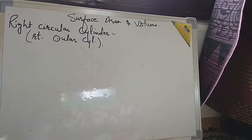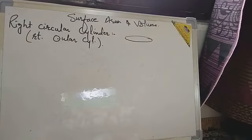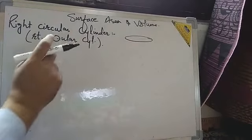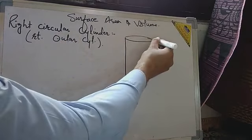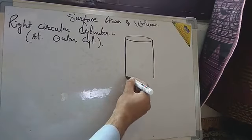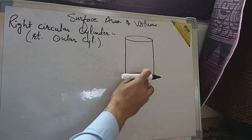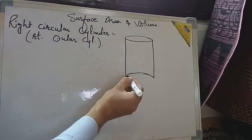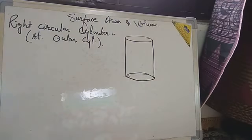Let us see how to draw the right circular cylinder. You have to draw a circle on the top, but the circle should be in oval shape. Then you have to take two vertical line segments and draw one more circular base here, and this shows us a right circular cylinder.